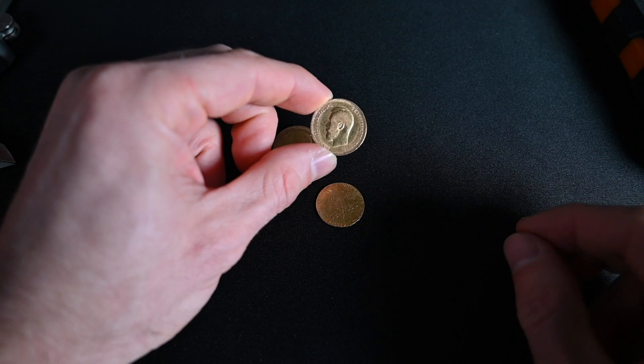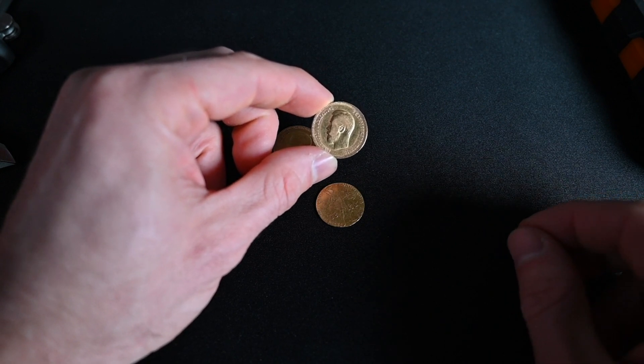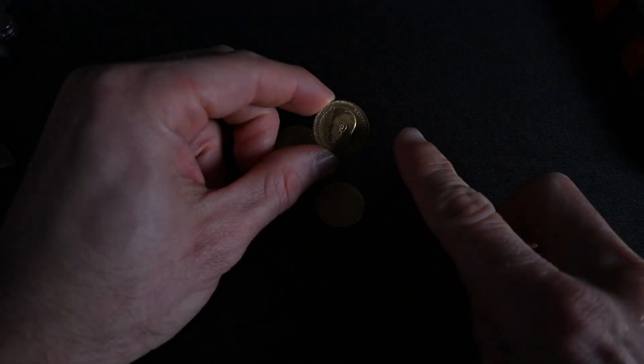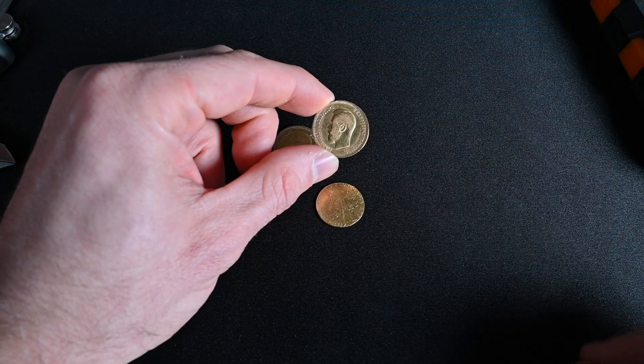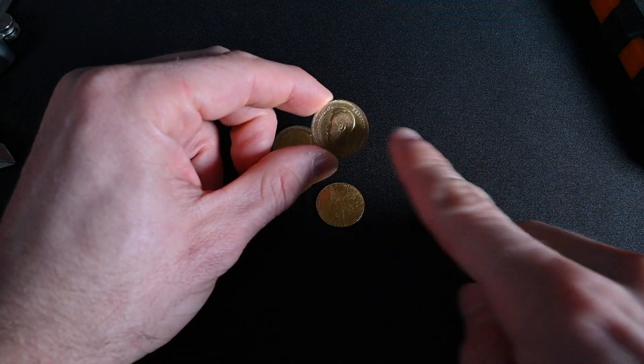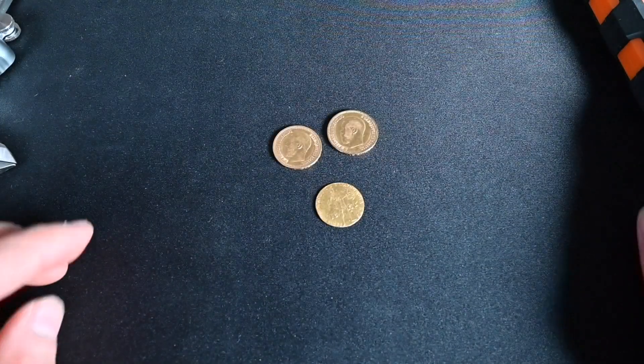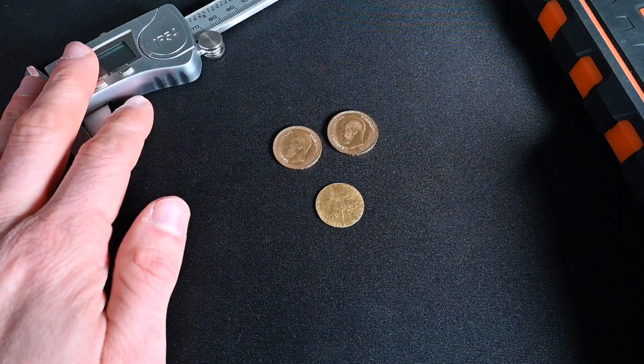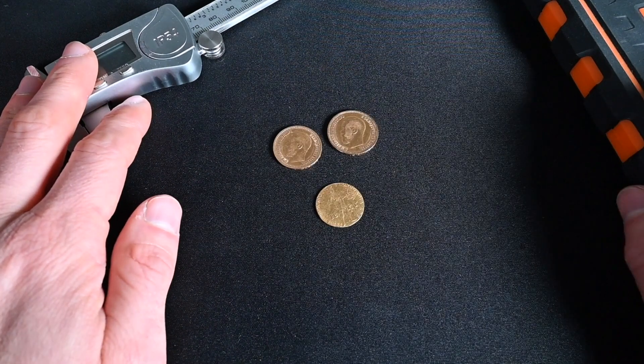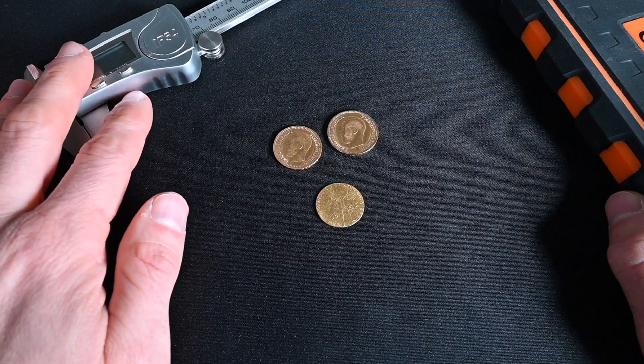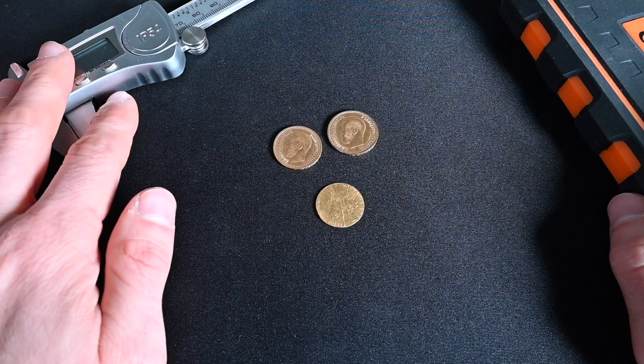Or you'd have to make it the same diameter, but it would be much lighter. So using a scale and a way to measure the diameter and also theoretically measuring the height of the coin is pretty much a foolproof way of determining whether it's real.